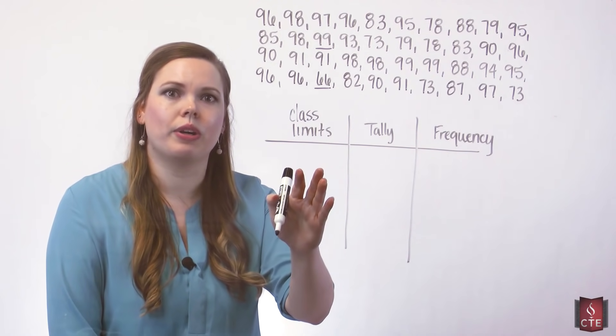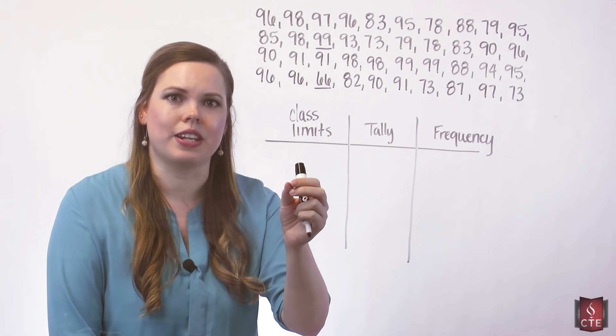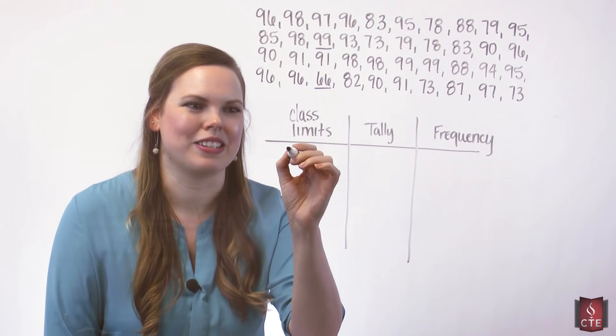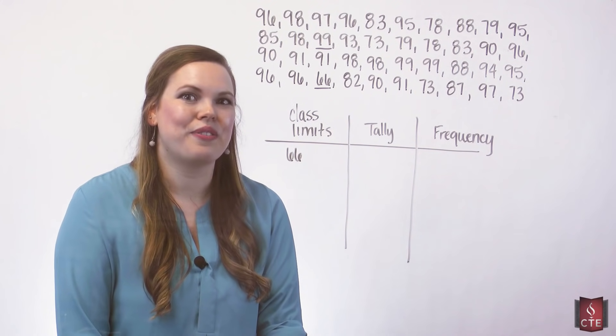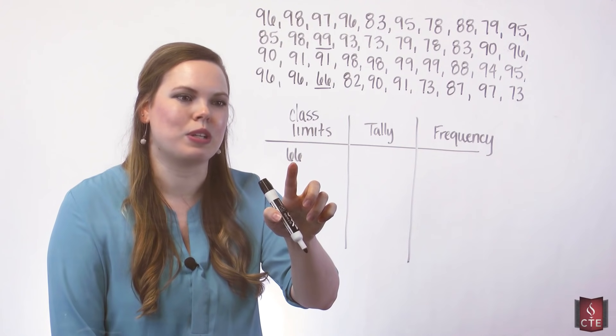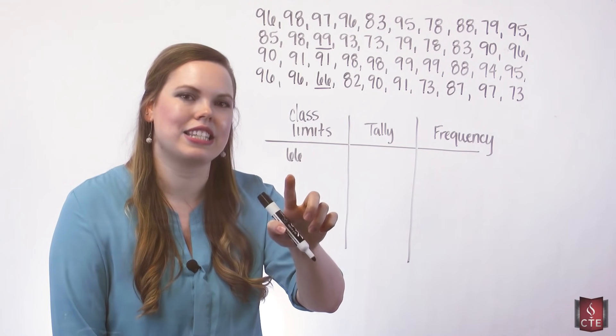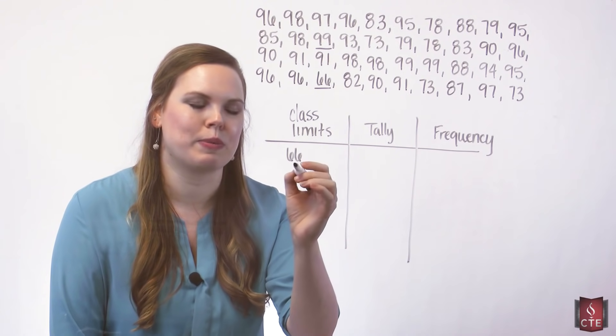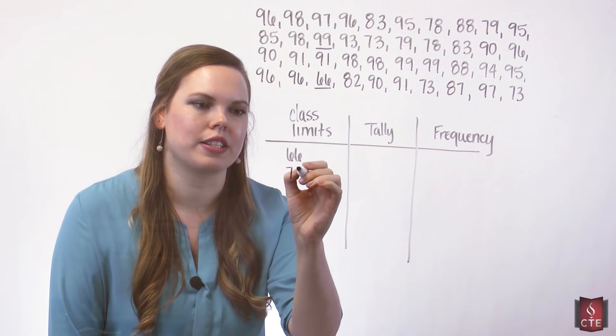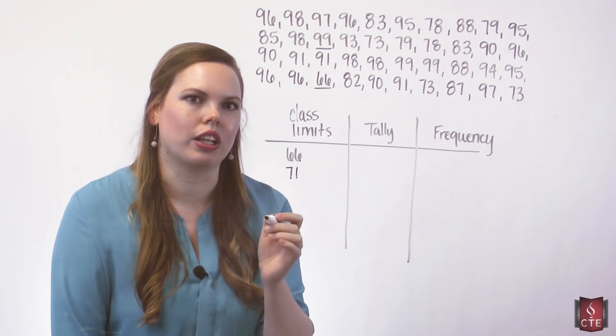Our class limits always start with our smallest data value. So here it would be 66. Our class width is 5. The difference between 66 and our next lower class limit should be 5. So 66 plus 5 is 71. That's going to be our next lower class limit.